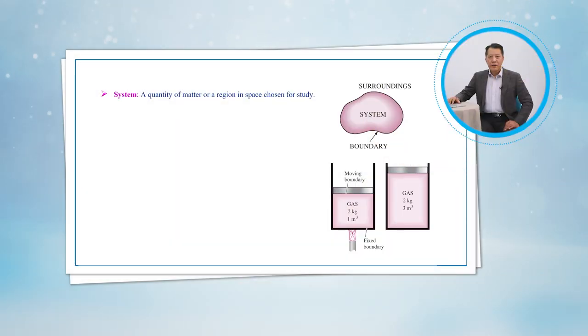Well, a system is defined as a quantity of matter or a region in space chosen for study. The mass or region outside the system is called the surroundings. The real or imaginary surface that separates the system from its surroundings is called the boundary.